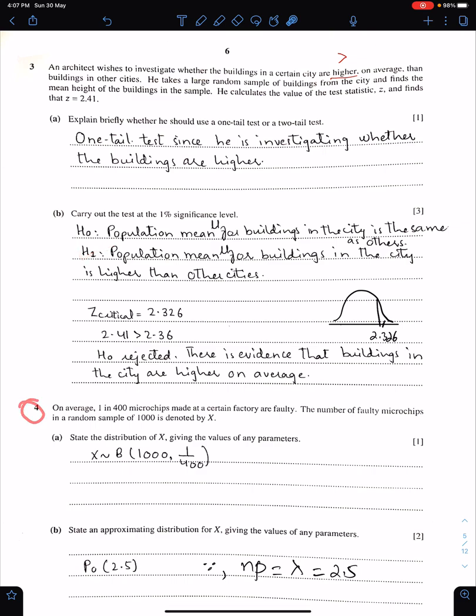Question number 4. On average, 1 in 400 microchips made of certain factory are faulty. This means binomial distribution because we have two outcomes, good or faulty. And 1 in 400 means P. P is 1 upon 400. The number of faulty microchips in a random sample of 1000, this is the value of N, is denoted by X. So X follows binomial with N1000 and P1 upon 400.